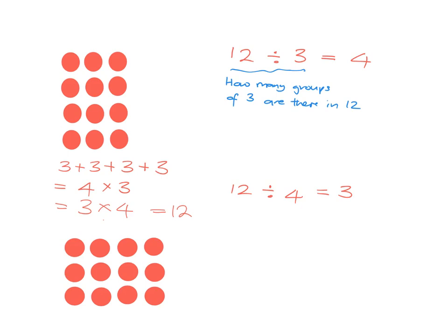And then in a related way, we can obviously see this thing, the 12 divided by four, as being saying how many groups of four are there in 12? And if we just look at it in this way, there's one, two, three groups of four in 12. And that's why 12 divided by four is three.